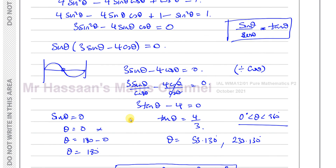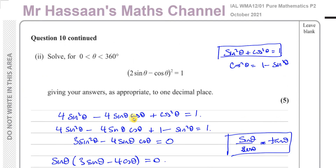That concludes this October 2021 Pure Mathematics P2 exam paper. All other questions can be found in the playlist. A PDF of the paper and mark scheme will be linked in the playlist description. All trigonometry questions from P2 are in the link shown. Thank you for watching and see you soon.